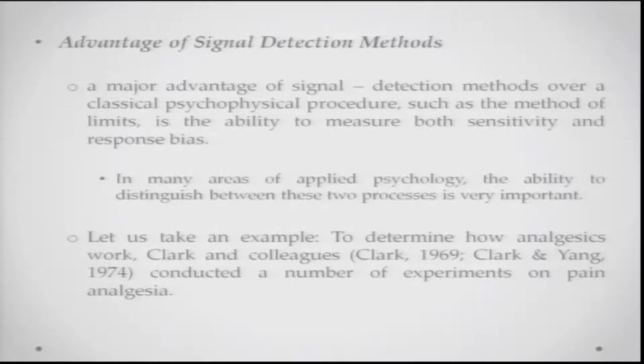One major advantage of signal detection methods over classical psychophysical procedures — like the method of limits — is the ability to measure and quantify both the sensitivity of the observer and the response bias. Both can really be plotted and figured out here. This ability to talk about and quantify both sensitivity and response bias is really important in many areas of applied psychology.